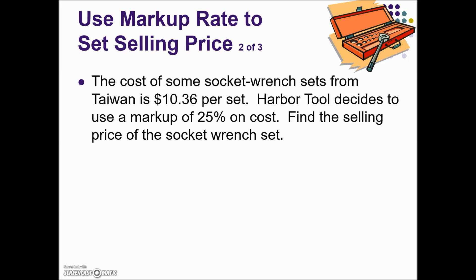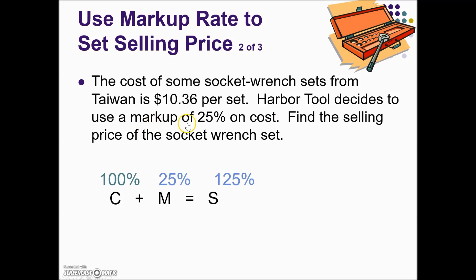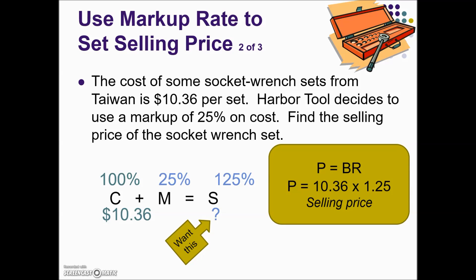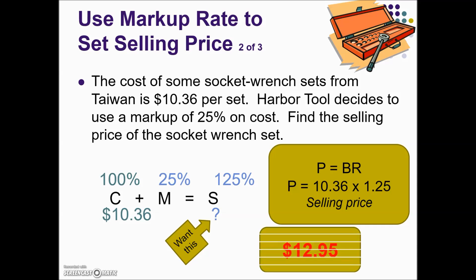In this next problem, the cost of socket wrench sets from Taiwan is $10.36 per set. Harbor Tool decides to use a markup of 25% on cost — find the selling price. Because markup is based on cost, that dictates where the base 100% falls. With a 25% markup, adding 100 plus 25 tells us the selling price is 125% of cost. Plugging in the cost of $10.36 as our base, we take base times rate to find the selling price.